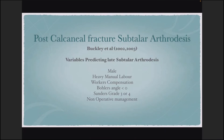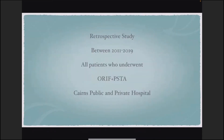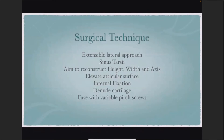In Cairns in 2011, Arvin and colleague Will Bryson started offering patients the option of a surgery that could avoid prolonged disability and a second operation. He will show through a small study the benefits of doing primary subtalar fusion in os calcis fractures that are grade 3 or 4 under the Sanders classification. This retrospective study covers eight years, including all patients who underwent open reduction internal fixation along with primary subtalar arthrodesis at both public and private hospitals — 16 patients, all males, with an average age of 49 years, one third with workers compensation.